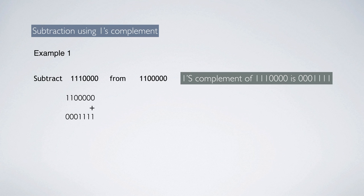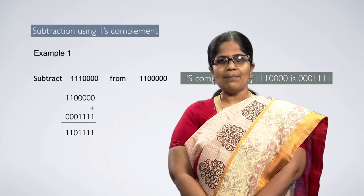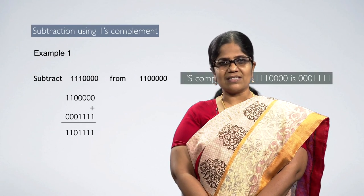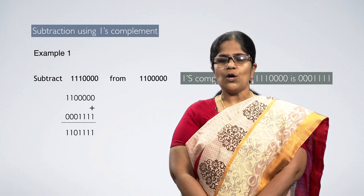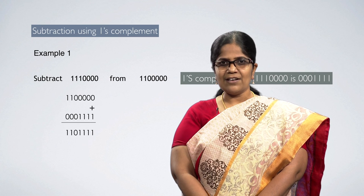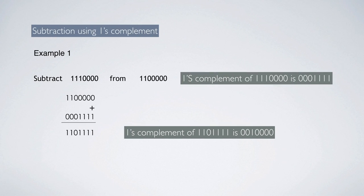When we perform binary addition, we get the answer 11011111. In this case, we do not get any carry — the number of bits in the given number and the result are the same. Whenever in subtraction using 1's complement when no carry is obtained, find the 1's complement of the result and add a negative sign to it. So the 1's complement of the result 11011111 is 00100000.